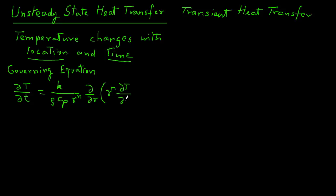Here, r is the distance from the center location of the object. And n, which is the exponent, has three different values. n is equal to 0 for a slab shape, n is equal to 1 for a cylinder shape, and it equals 2 for a sphere.